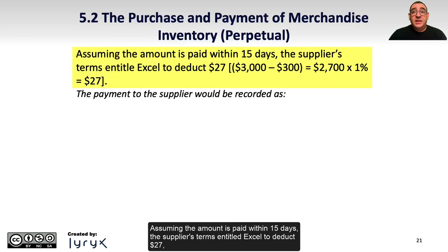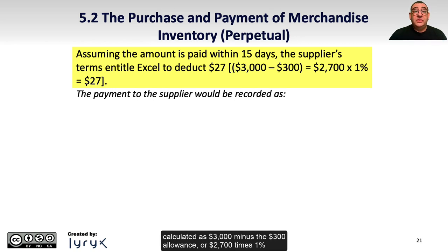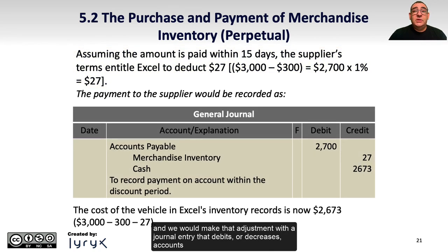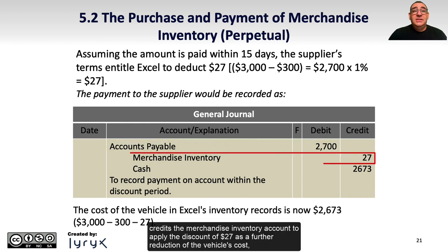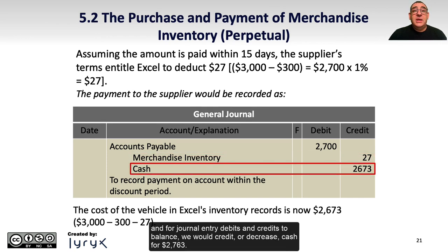Assuming the amount is paid within 15 days, the supplier's terms entitle Excel to deduct $27, calculated as $3,000 minus the $300 allowance, or $2,700, times 1%. We would make that adjustment with a journal entry that debits or decreases accounts payable for the full amount due of $2,700, credits the merchandise inventory account to apply the discount of $27 as a further reduction of the vehicle's cost, and credits or decreases cash for $2,673.